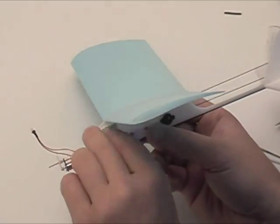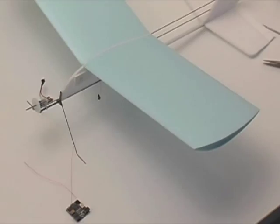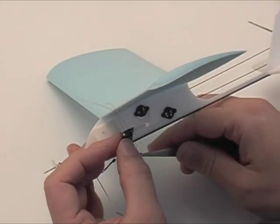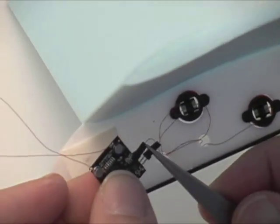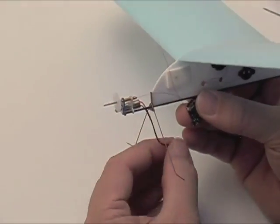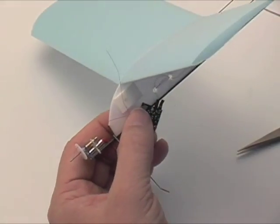Now you can get the double-sided foam tape and put it on the front end of the fuselage. Get your receiver out and connect your rudder and actuator nano connectors to the receiver and connect your motor.